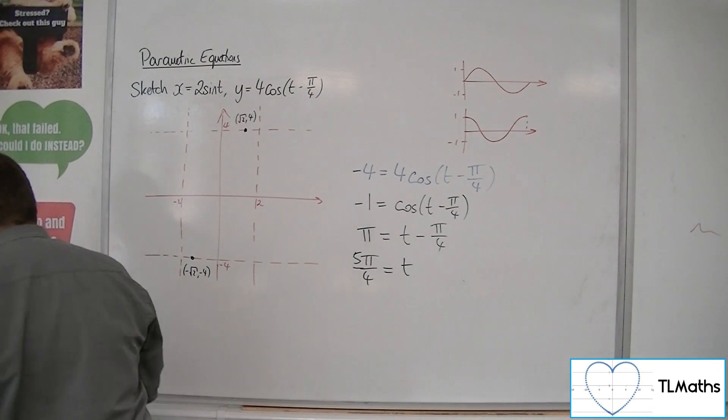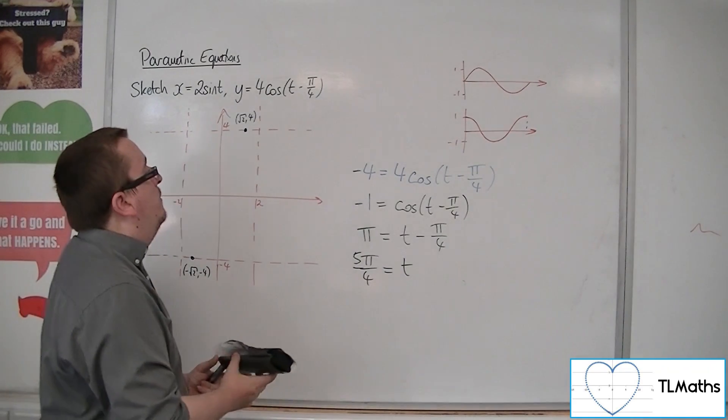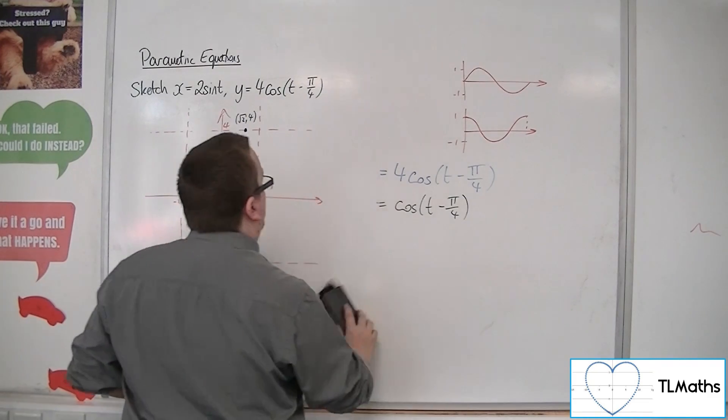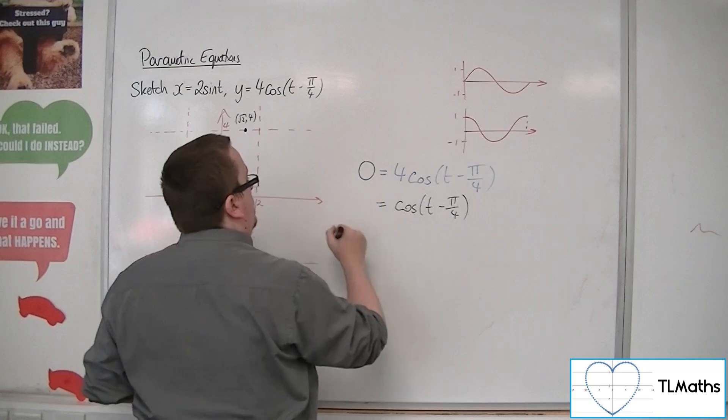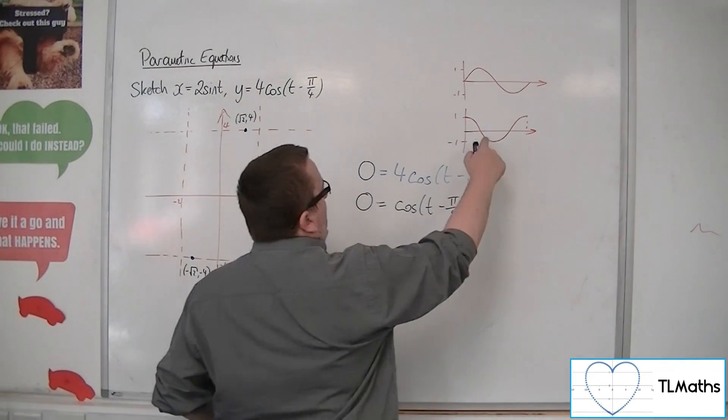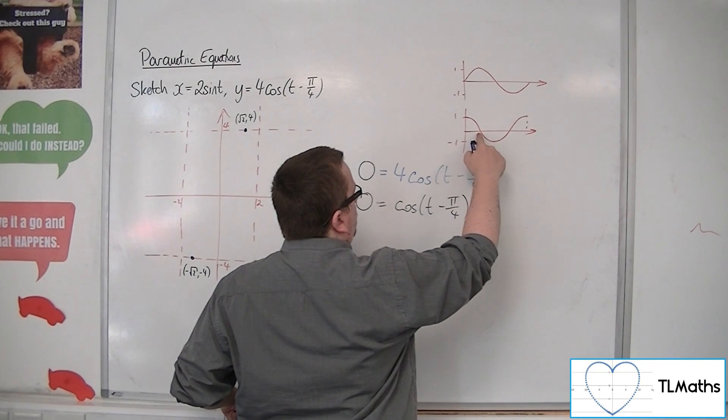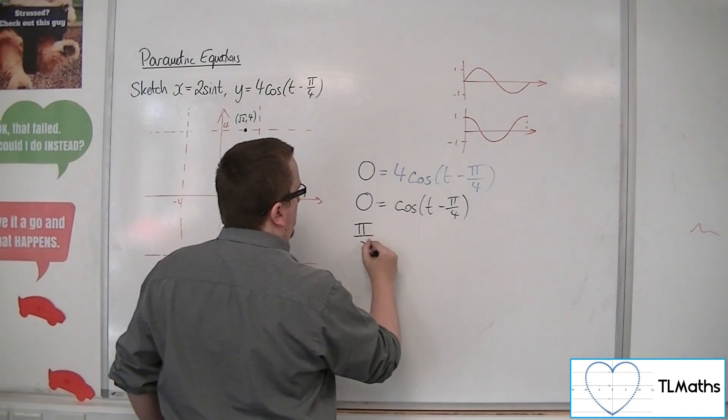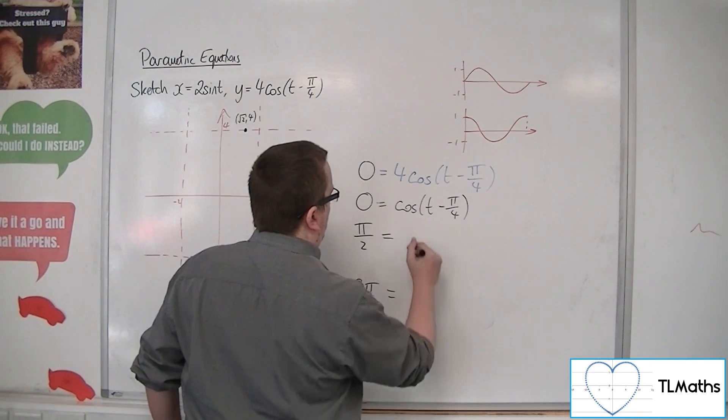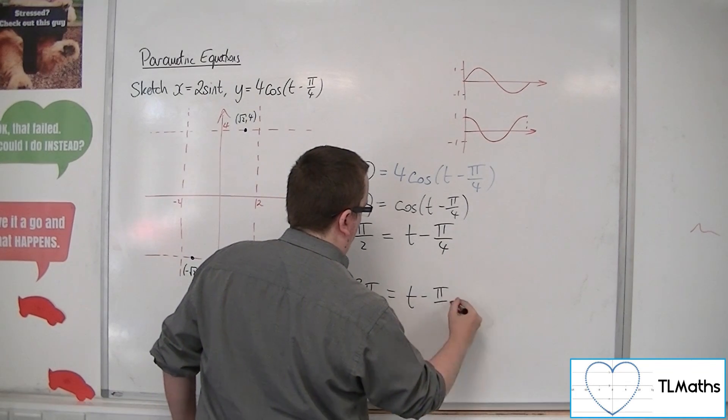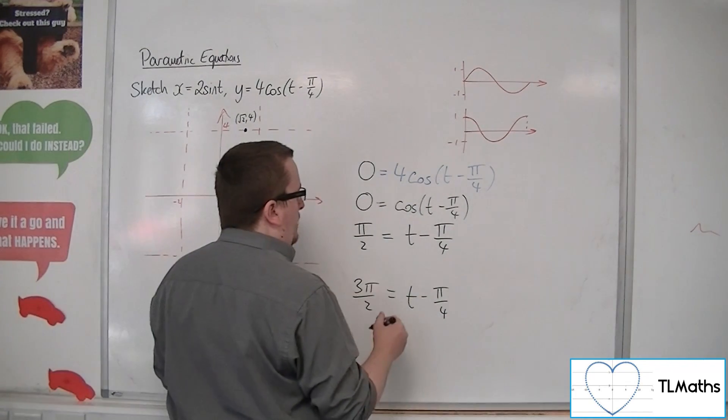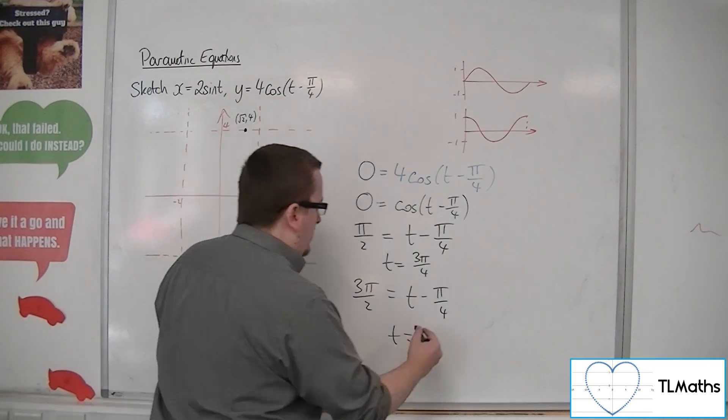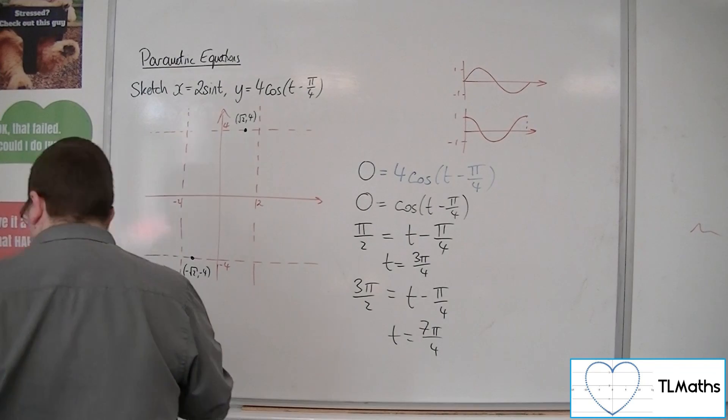Now what else have we got? Well we might also want to know where is this 0. So where is it 0? Dividing through by 4, we get 0. So that would be at pi over 2 and 3 pi over 2. So pi over 2, 3 pi over 2, must be equal to t minus pi over 4. So add the pi over 4 to both sides, we get t is 3 pi over 4. And adding the pi over 4 to both sides, we get 7 pi over 4.